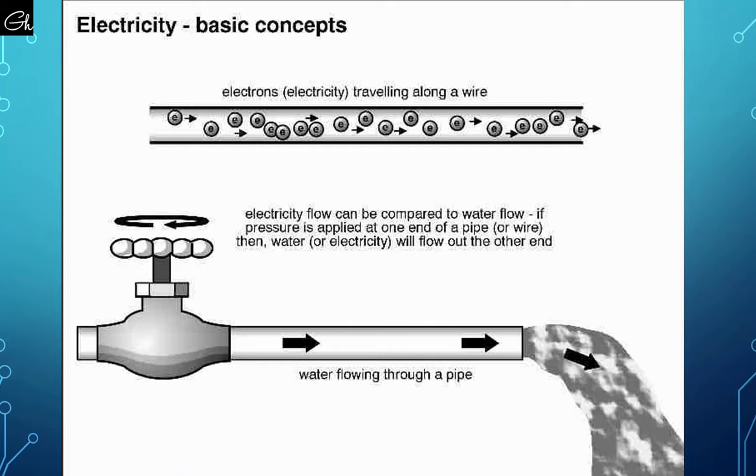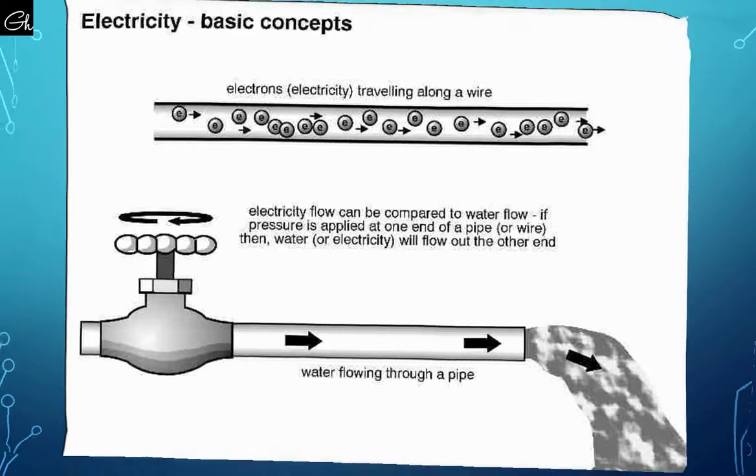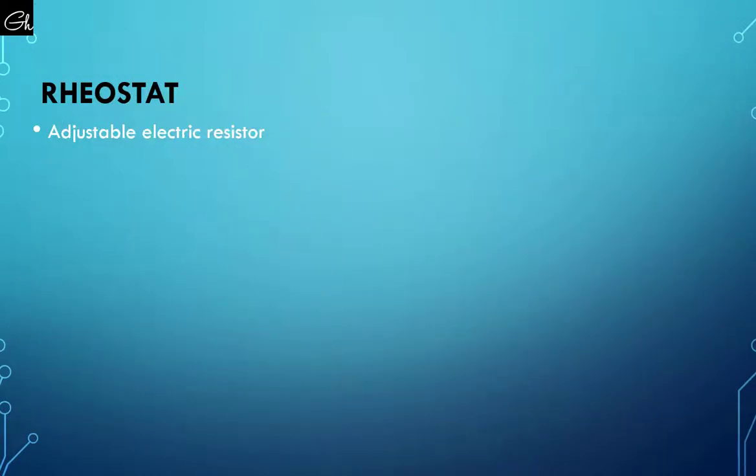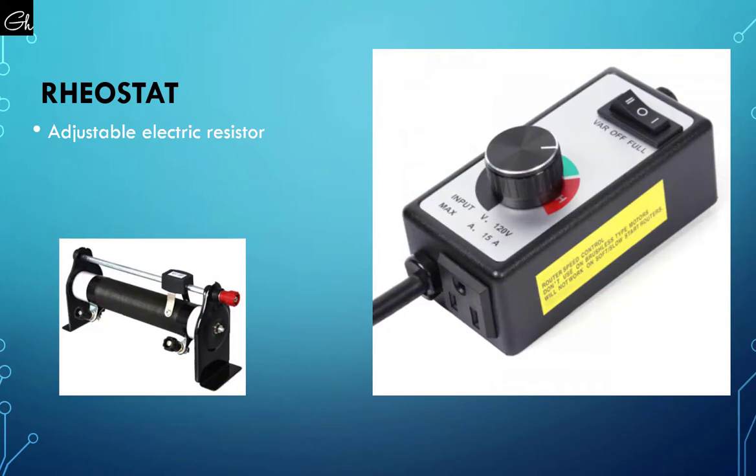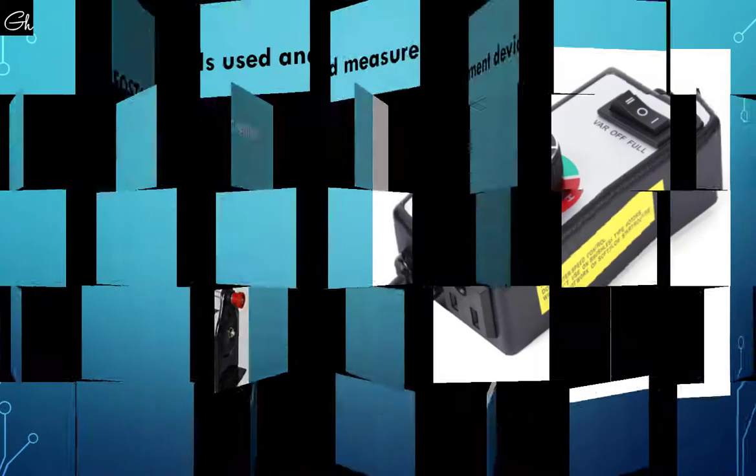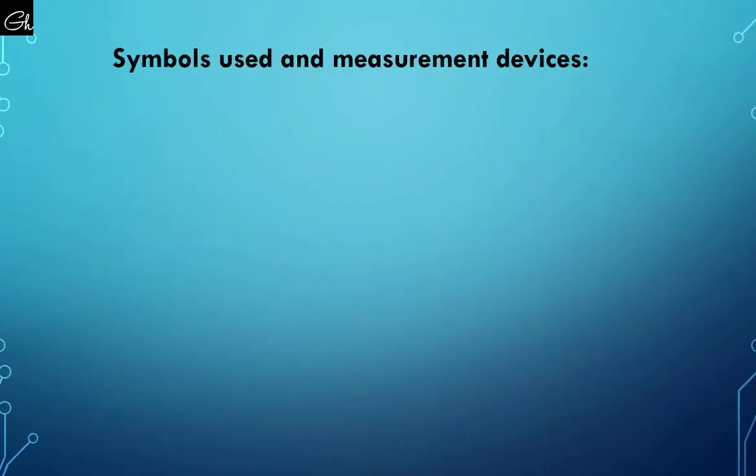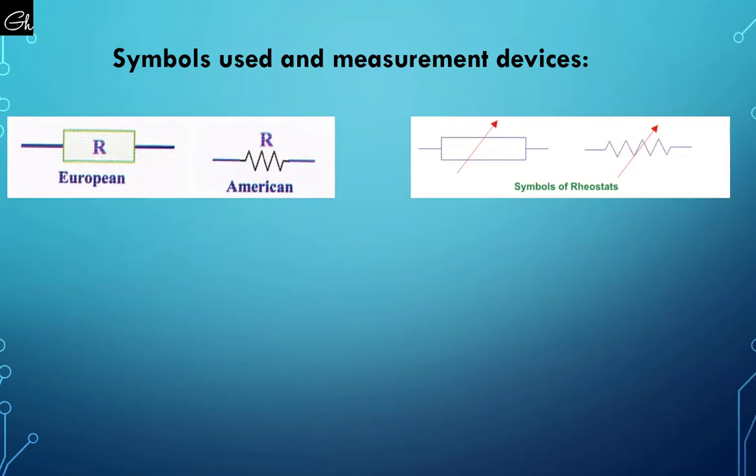Rheostats are used to regulate the speed of fans and other machines. A rheostat is an adjustable electric resistor. You can see these symbols representing a resistor, or the right symbols representing a rheostat.